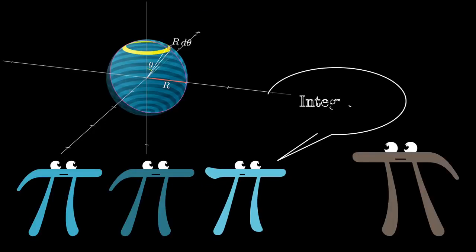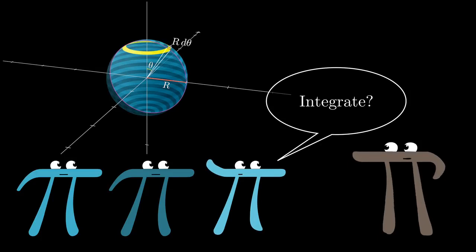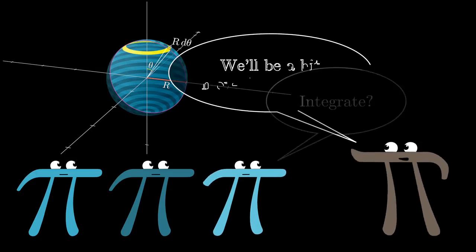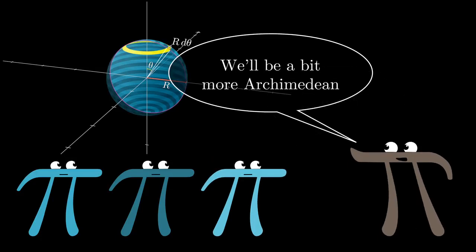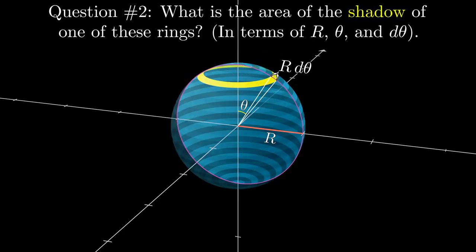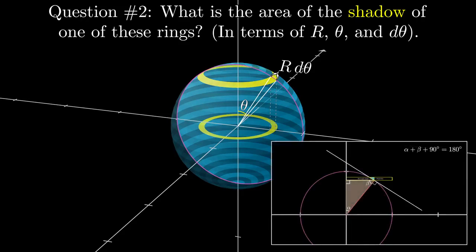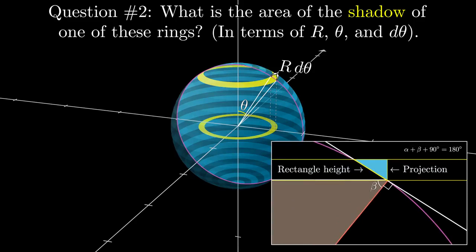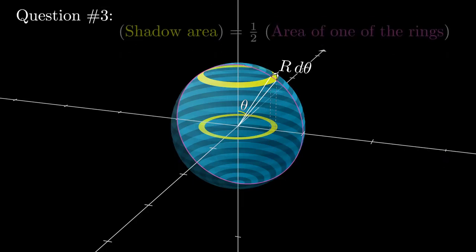And at this point, if you know your calculus, you could integrate. But our goal is not just to find the answer, it's to feel the connection between the sphere and its shadow. So, question number two, what is the area of the shadow of one of these rings on the xy plane? Again, expressed in terms of r, theta, and d theta. And for this one, it might be helpful to think back to that tiny little right triangle we were talking about earlier.